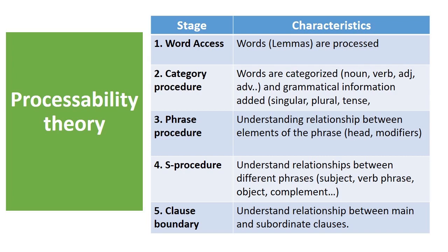In stage one, beginner learners are able to process only words. In the second stage, learners become able to identify the category of the word and classify them into verbs, nouns, adjectives, and prepositions, as well as determine whether they are singular, plural, past, present, or future. In the third stage, learners develop the ability to understand the relationships between parts of a phrase and determine the head from the modifier within the phrase.